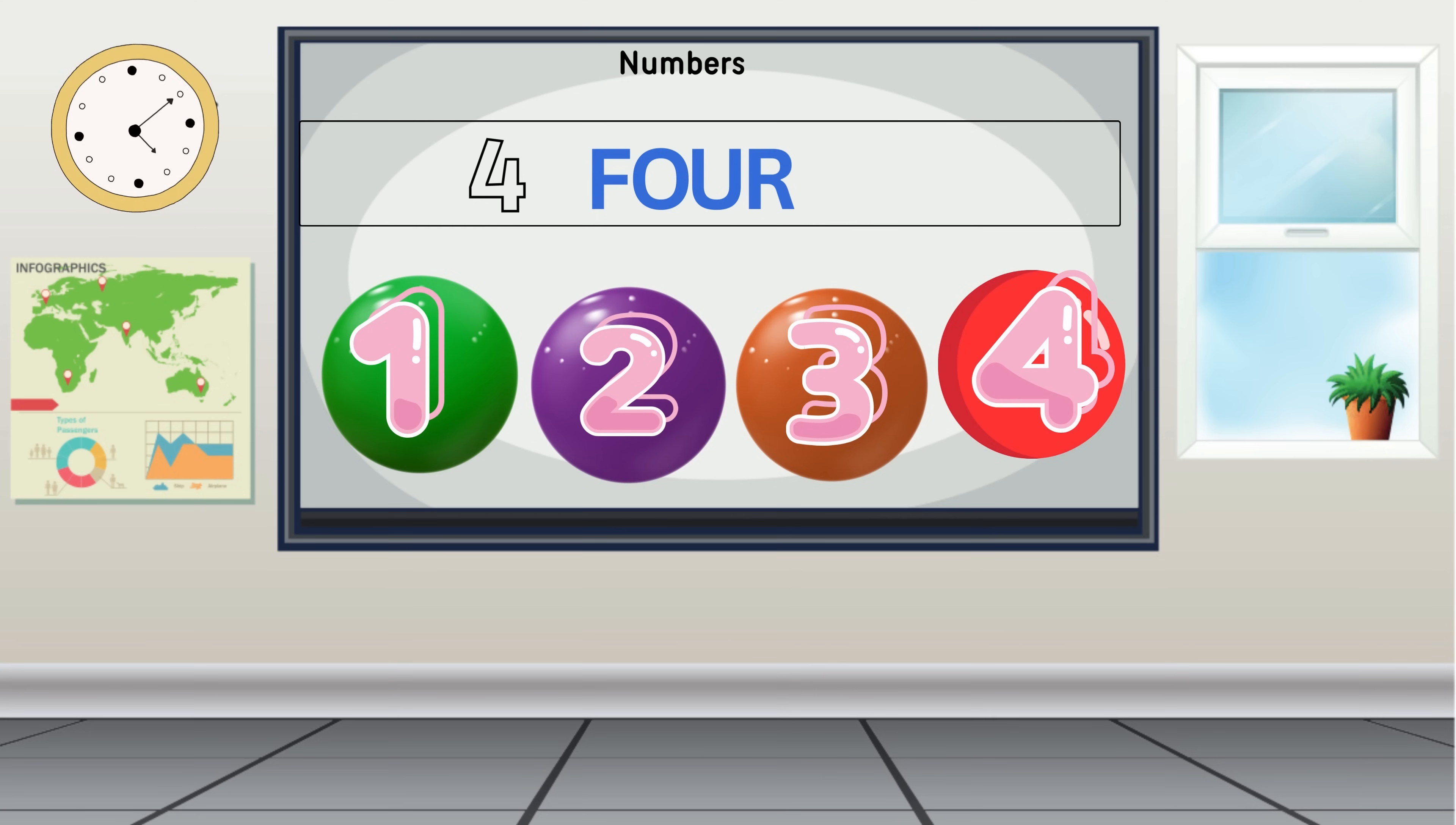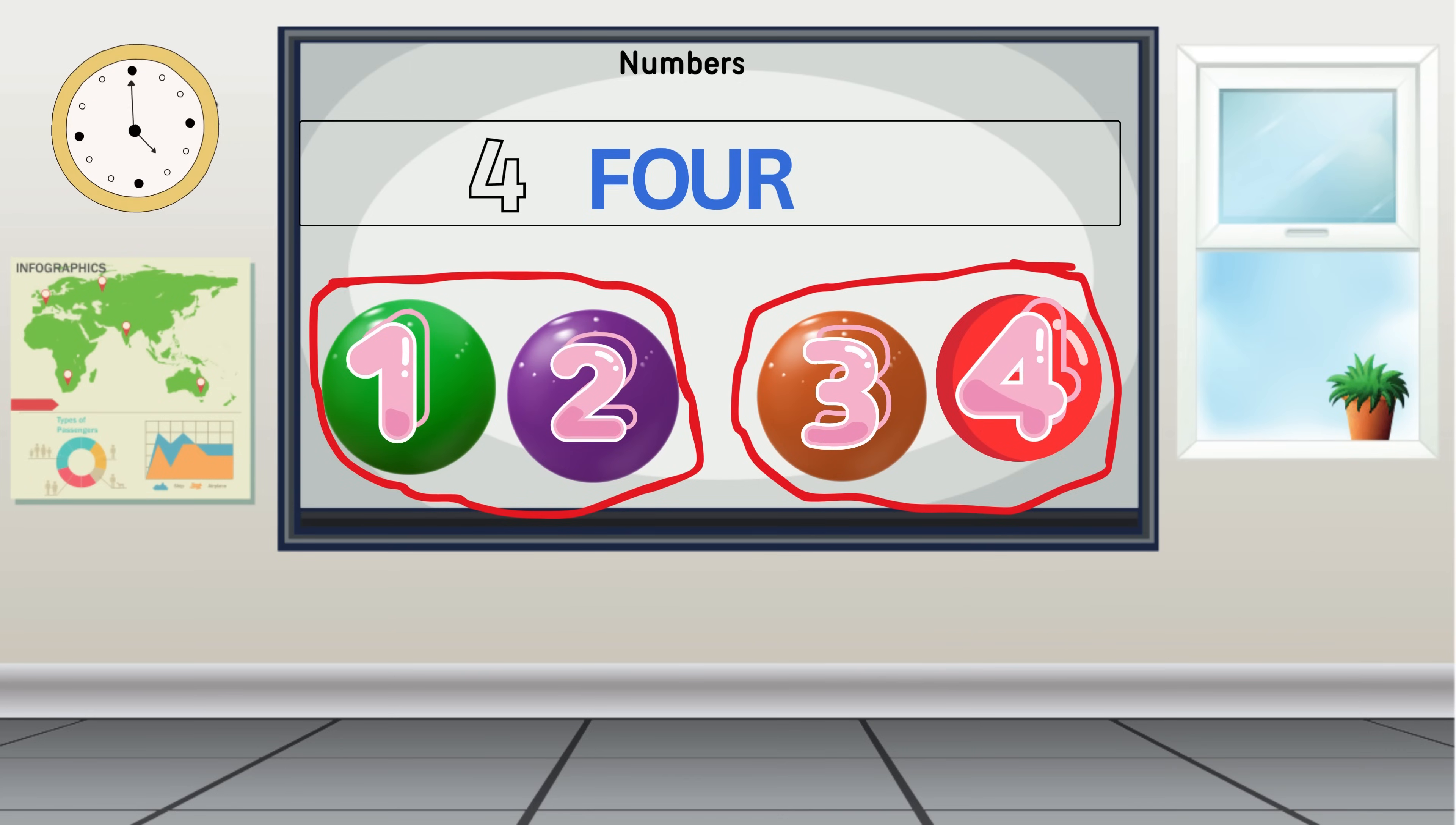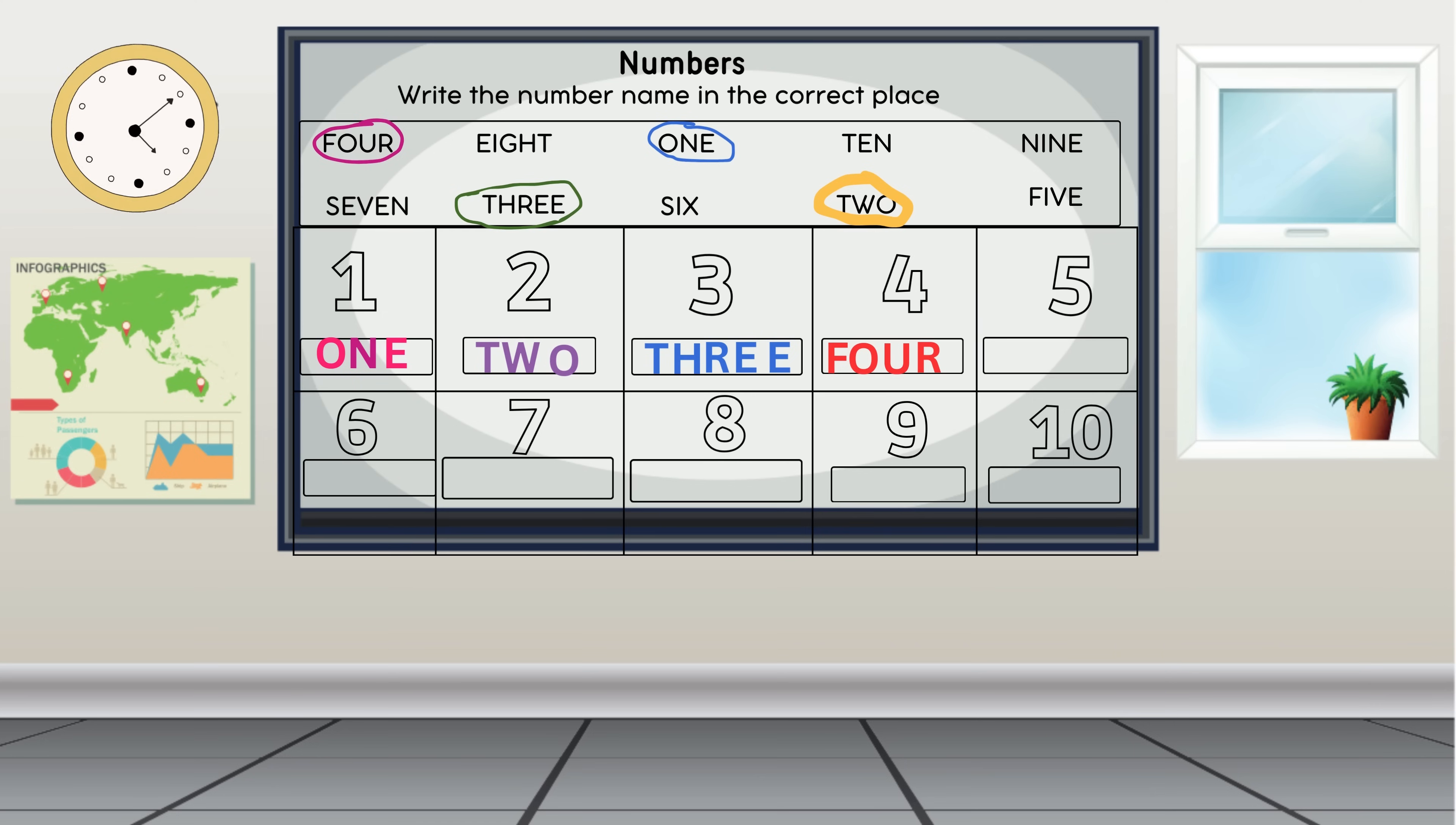Do you know the number four is an even number? An even number means you can split things into two equal groups without anything left over. Even numbers are like having pairs of things, just like your shoes. You have two shoes, one for each foot. That's because you have an even number of shoes. Excellent, we've just unveiled the wonders of four.